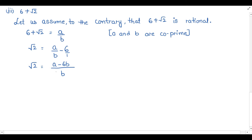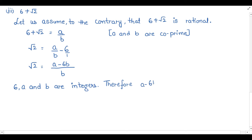Now a, b, and 6 are all integers, so their subtraction and division will surely give a rational number. So we can write: 6, a, and b are integers, therefore a minus 6b by b is a rational number. But from theorem 1.4, under root 2 is an irrational number. So we write: under root 2 is irrational.